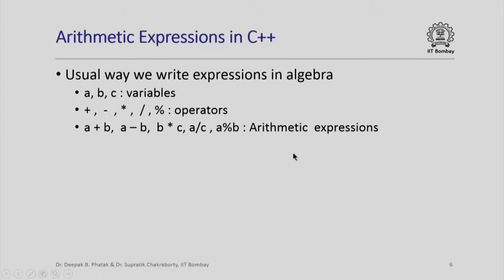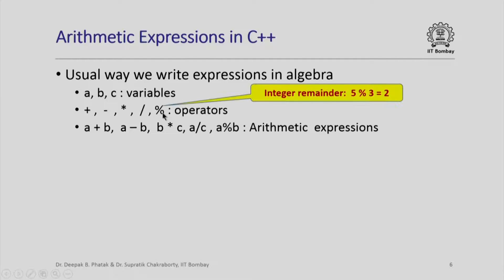Now how do we write arithmetic expressions in C++? We have variables a, b, c and different kinds of operators: addition, subtraction, multiplication denoted by a star, division denoted by slash, and the remainder operator denoted by percent. For example, 5 % 3 gives the remainder of 5 when divided by 3, which is 2. We can use these binary operators to form expressions like a+b, a-b, a/c, a%b, and so on.